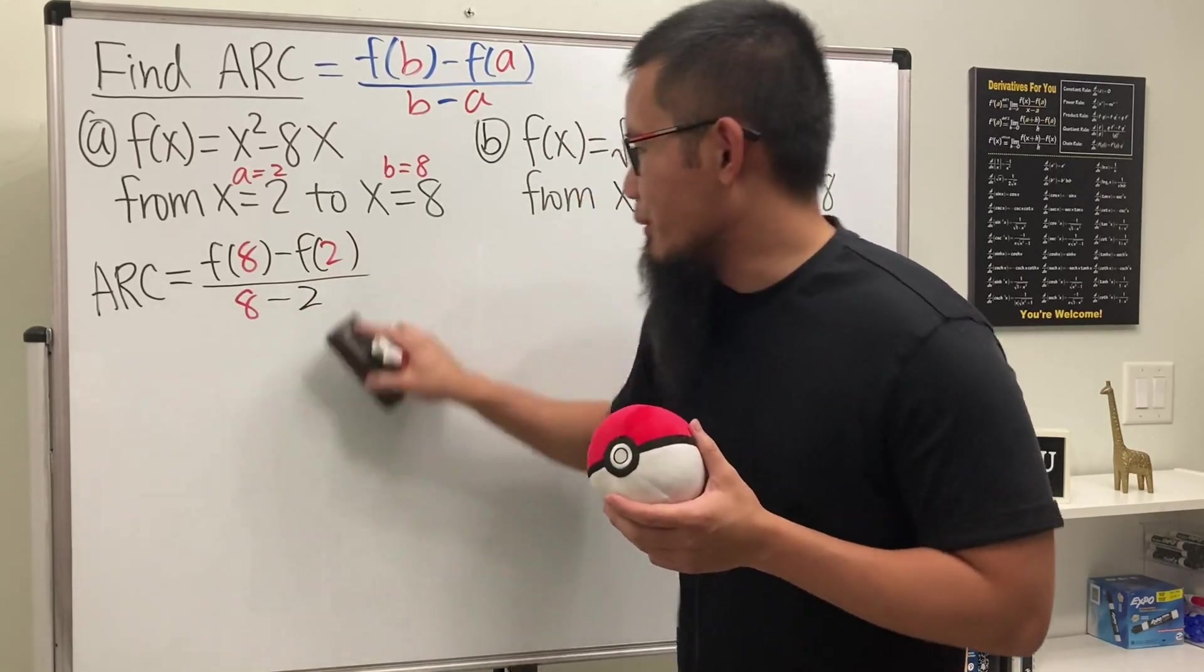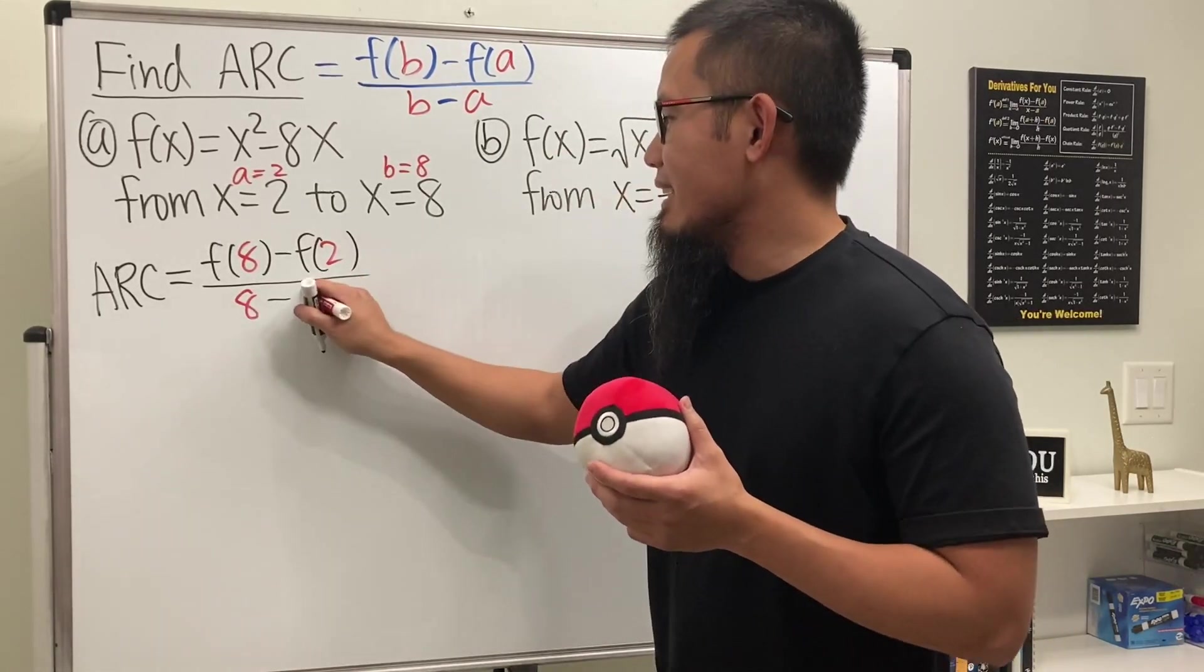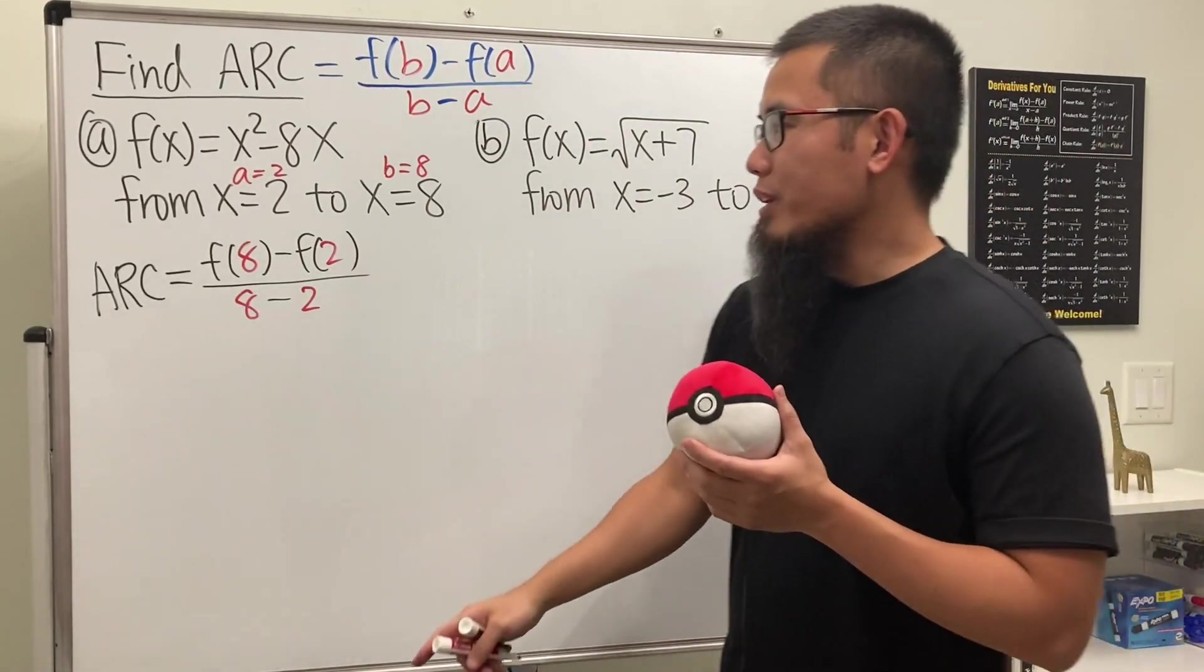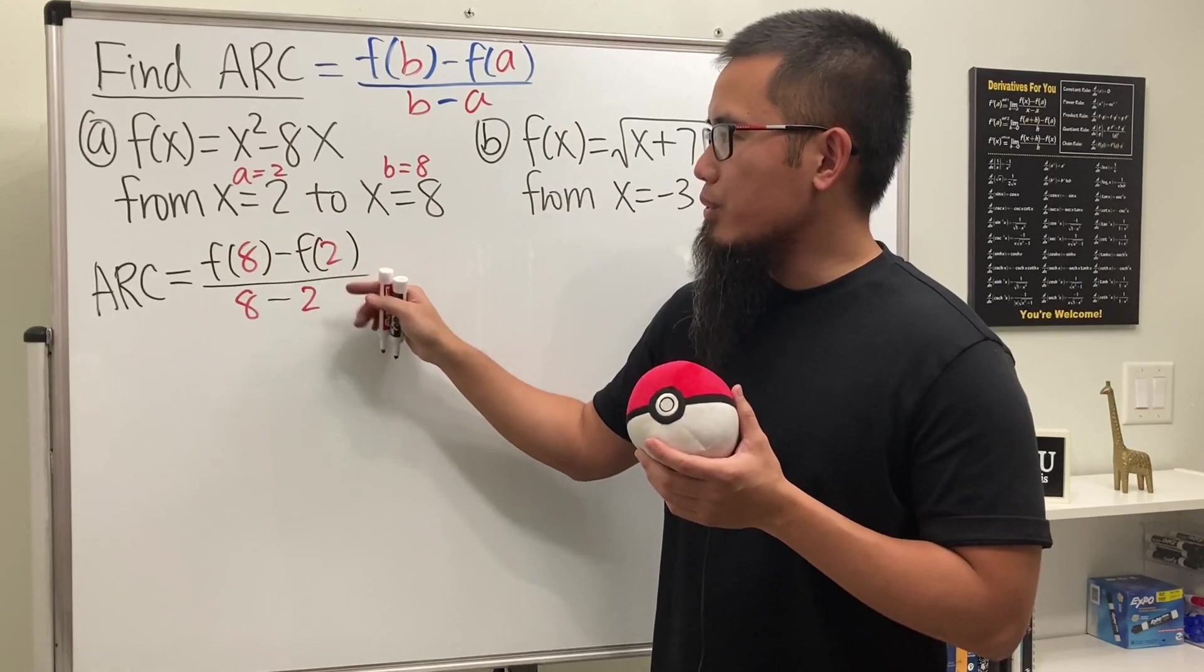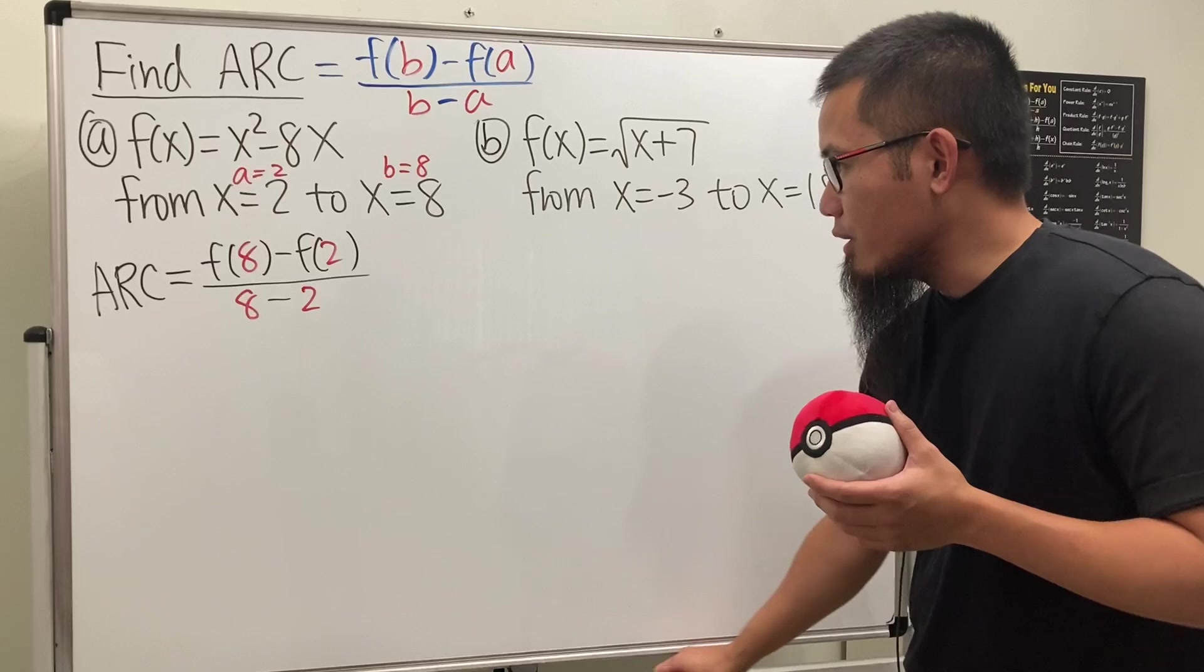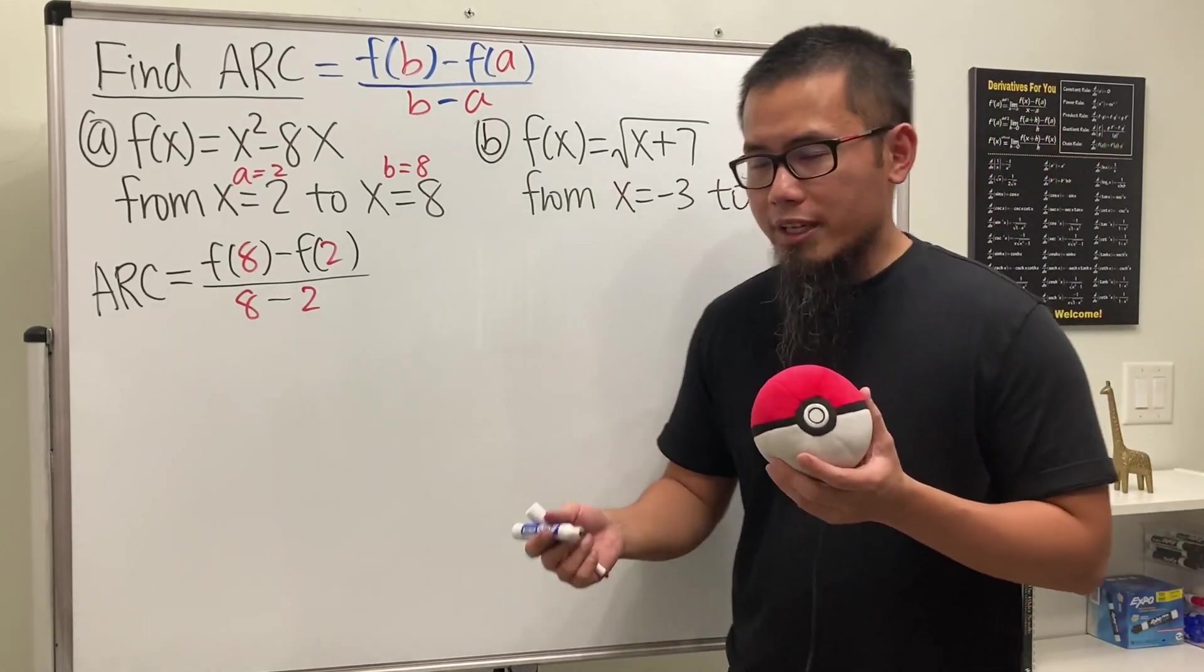This right here is the slope formula. I will recommend you compute the f of 8 and f of 2 somewhere else, maybe just on a scratch paper or whatsoever, so that way you can keep your work more organized.